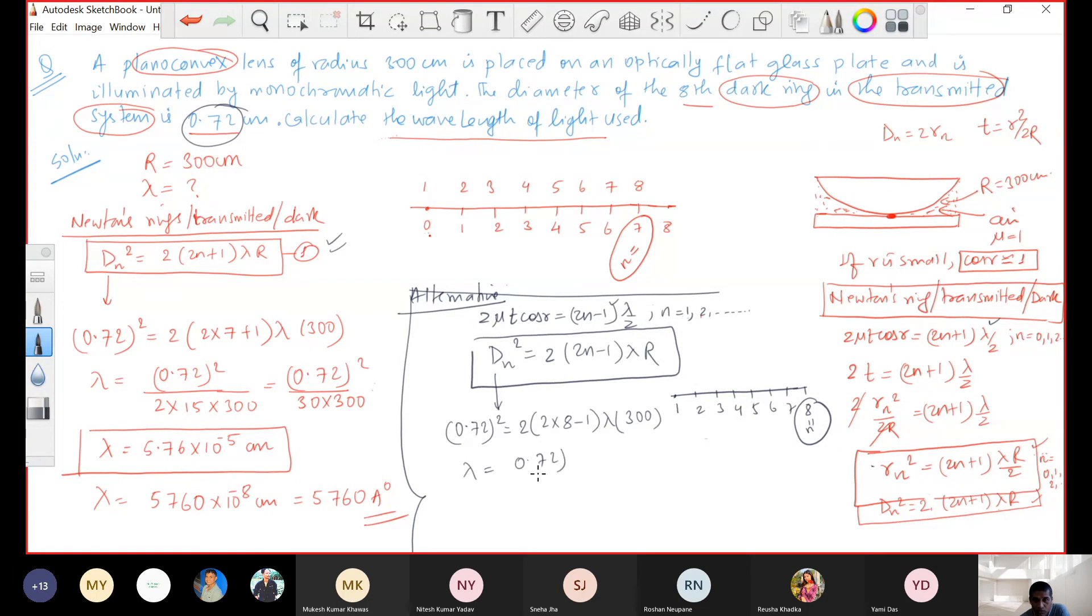Lambda is 0.72 squared. This is 2 into 8 to the 16 minus 1, this is 15. This is 0.72 squared, this is 2, this is 15, and this is 300. So what do you get? You get the same result.